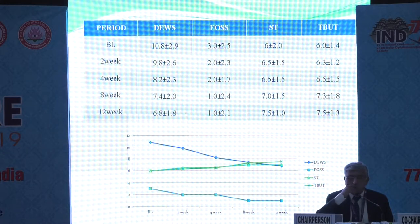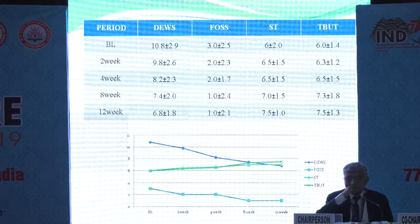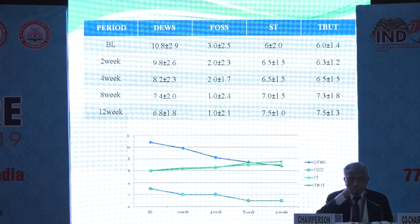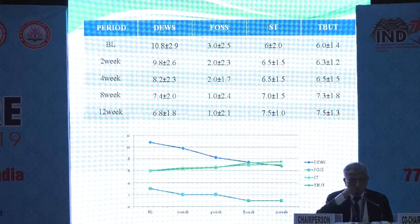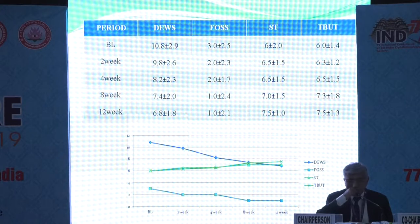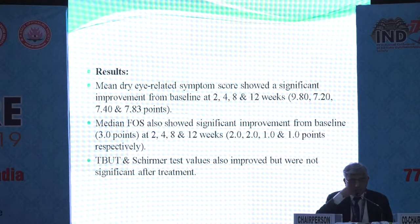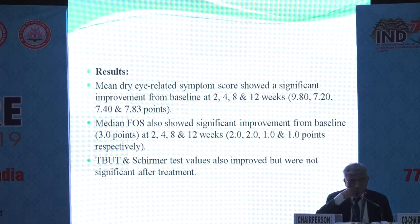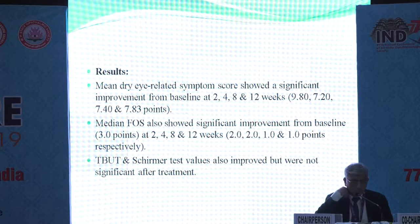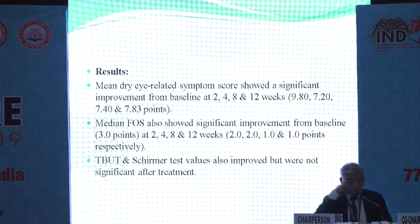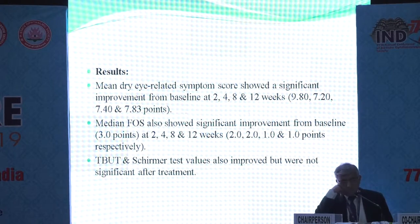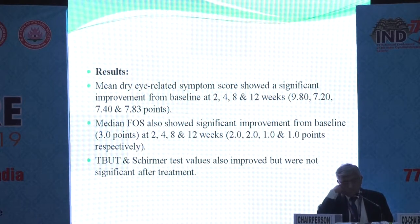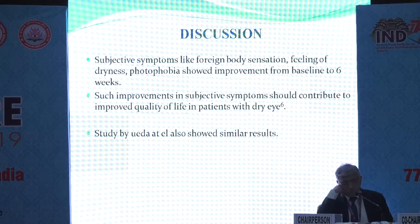On dry eye symptom score, all parameters related to dry eye were decreased. The mean dry eye related symptom score showed significant improvement from baseline to 2 weeks, 4 weeks, 8 weeks and 12 weeks. Median fluorescent ocular surface staining also showed significant improvement from baseline. TBUT and Schirmer test also showed improvement, but the improvement was not that significant.